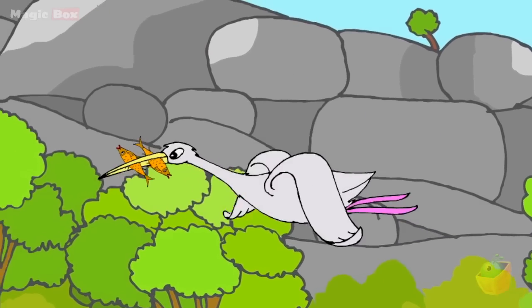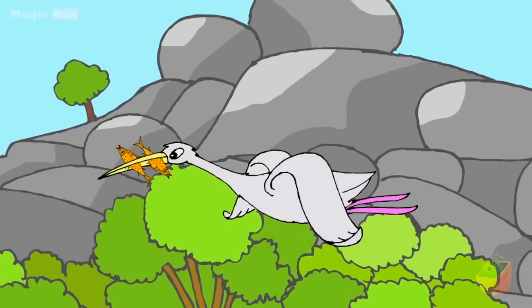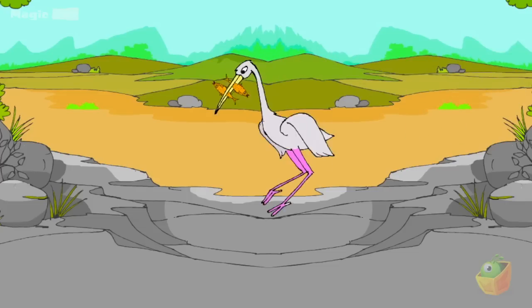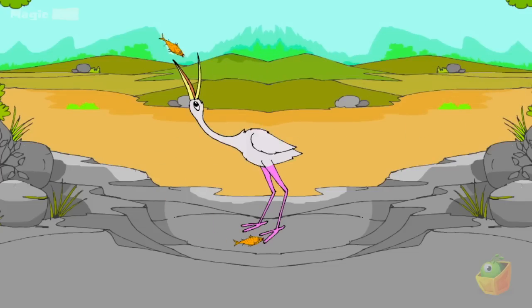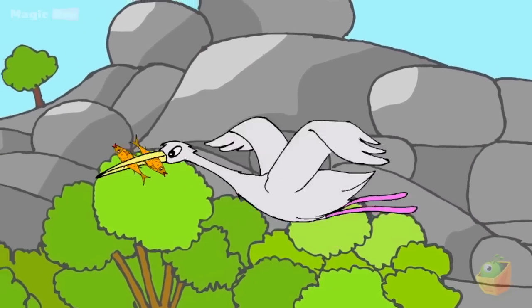From the next day onwards, the crane took as many fishes as possible in its long sharp beak to a rock and ate them happily. It acted as though it was doing a favour for the fishes and the crabs without expecting anything in return.